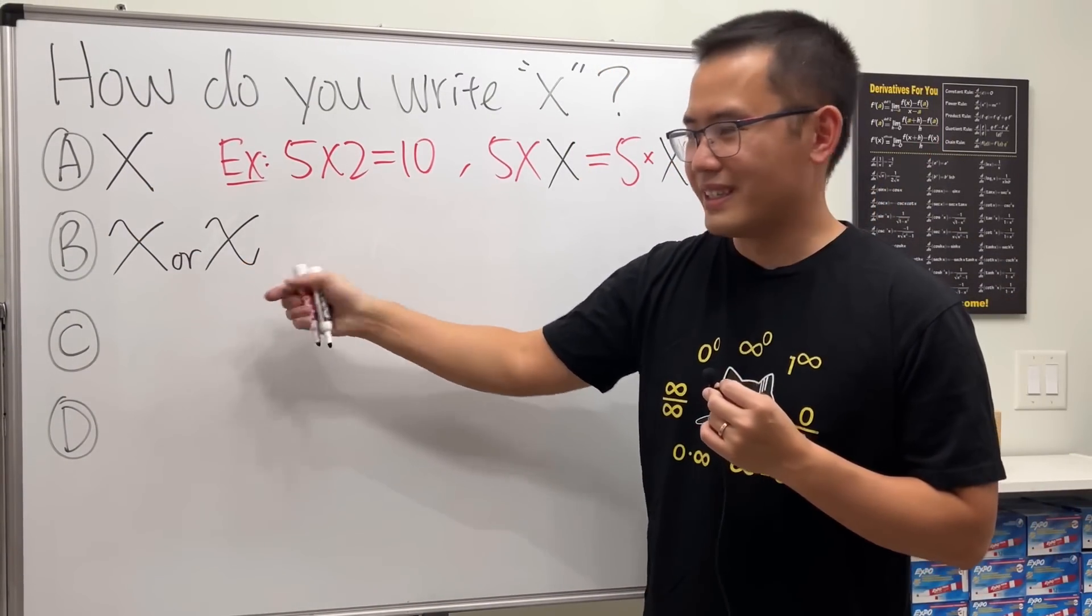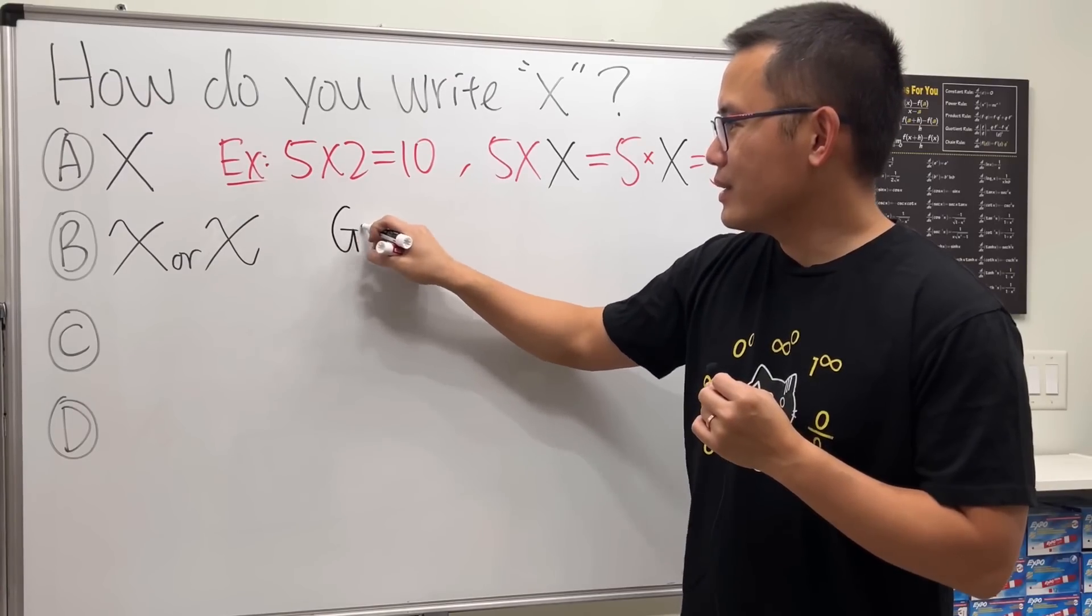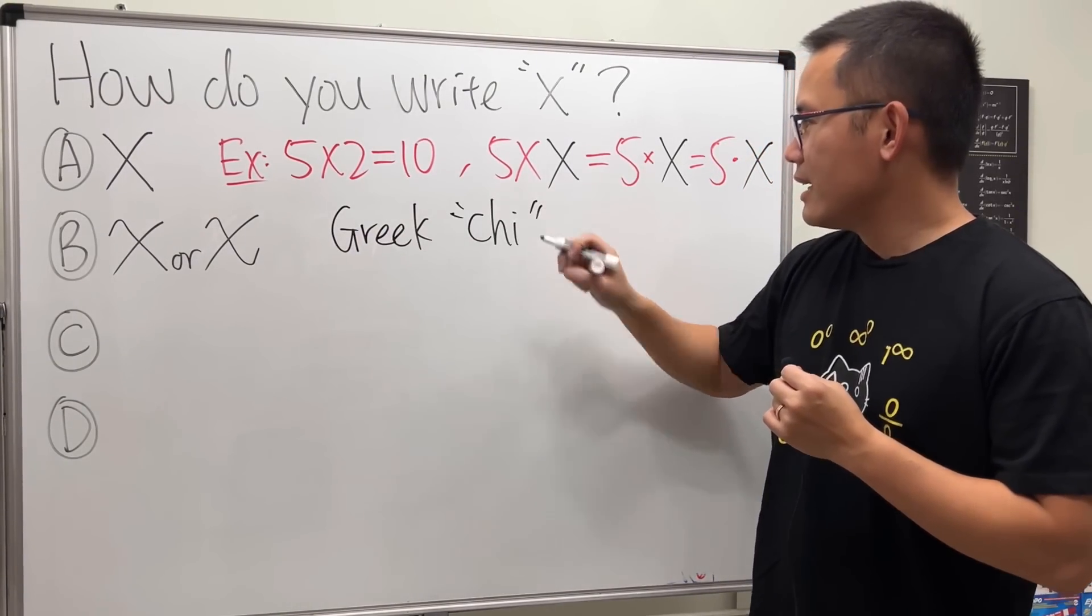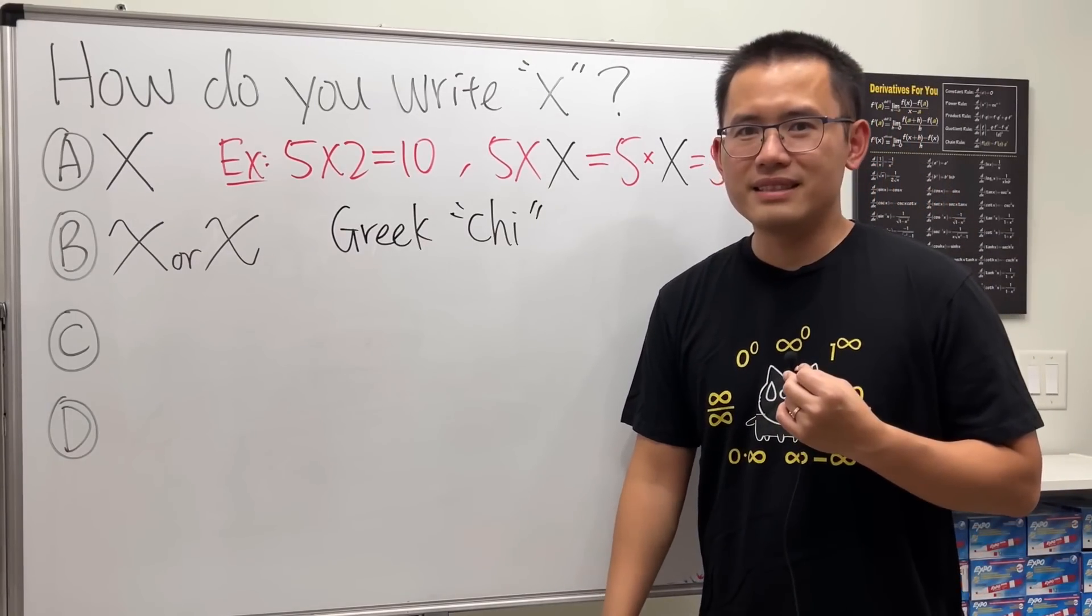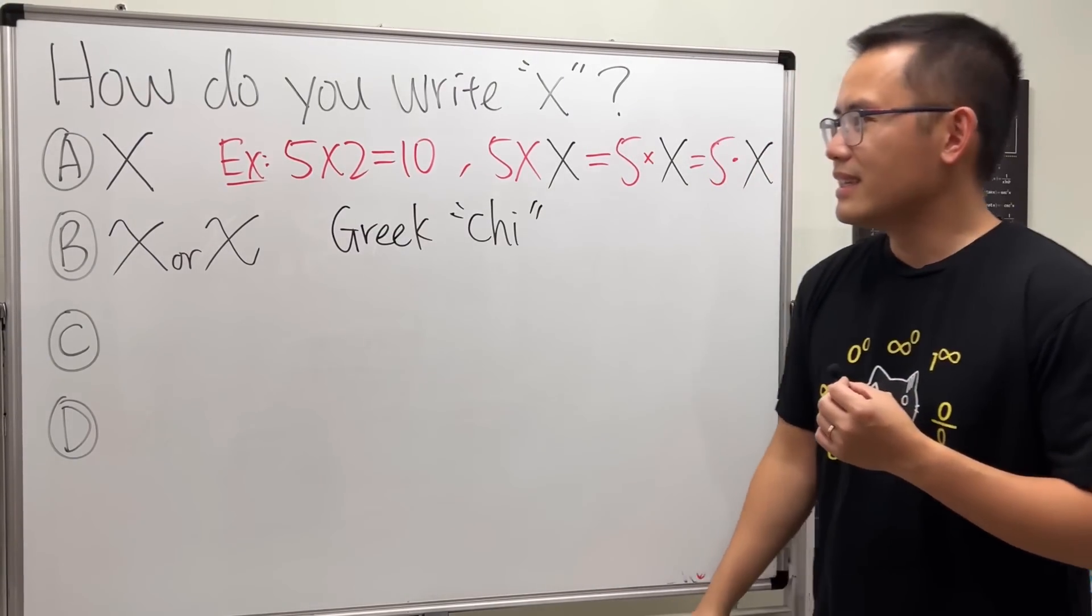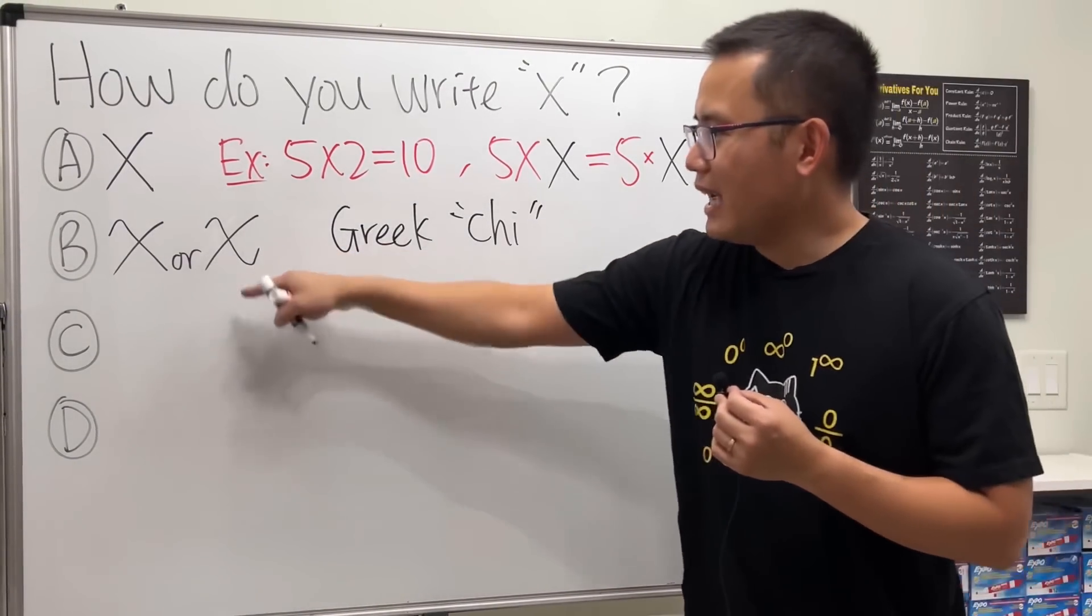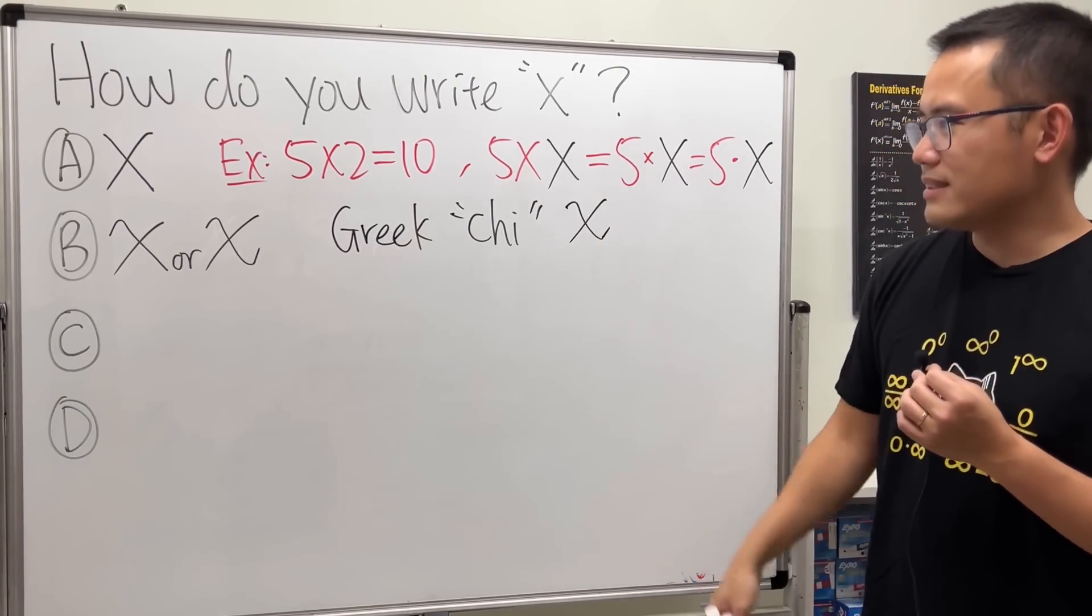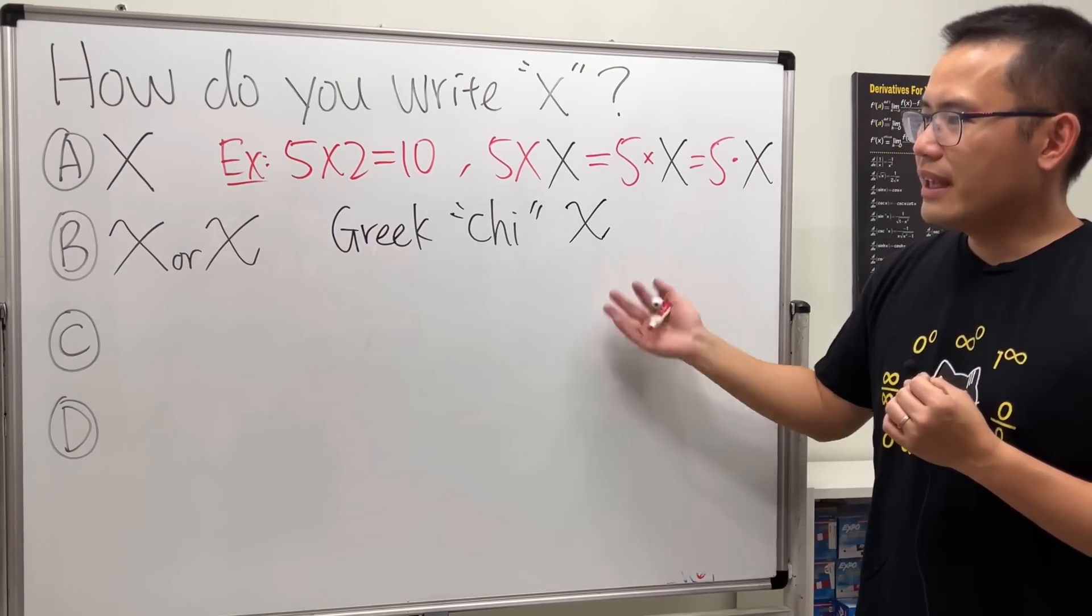I want to tell you though, in Greek, the Greek letter is—if you've done some stats then you know the chi-square test. It's the lowercase chi.